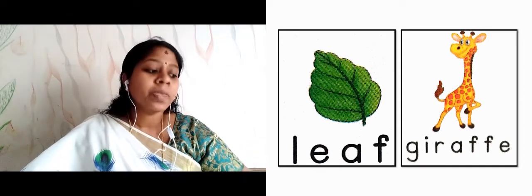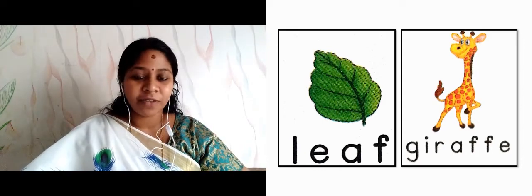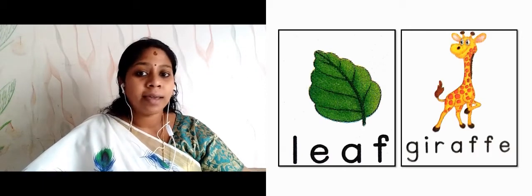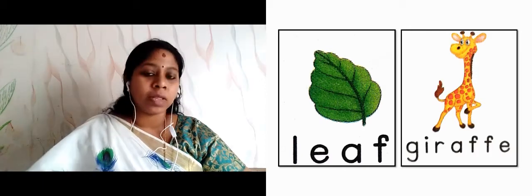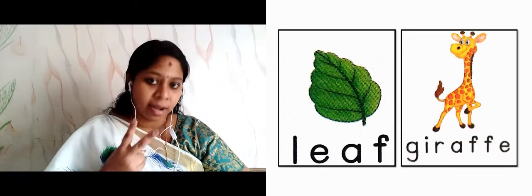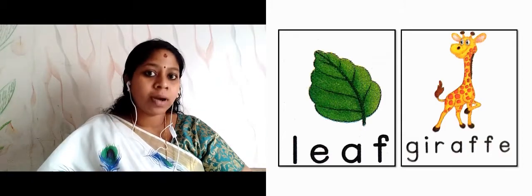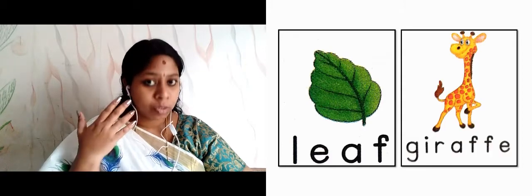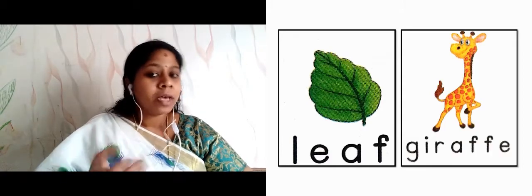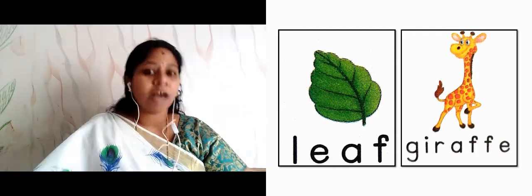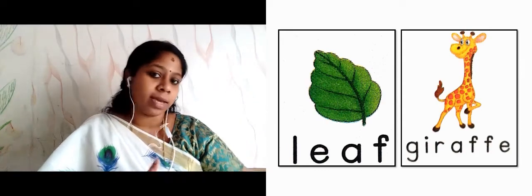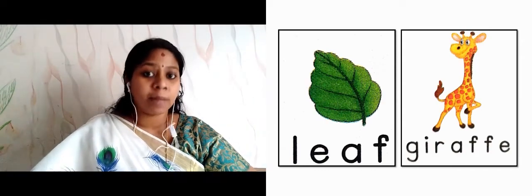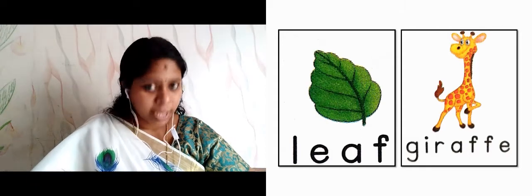Next image is giraffe — G-I-R-A-F-F-E. There are two F's in giraffe. To form a word, a letter can be used two times or one time. For giraffe we need double F — G-I-R-A-F-F-E.